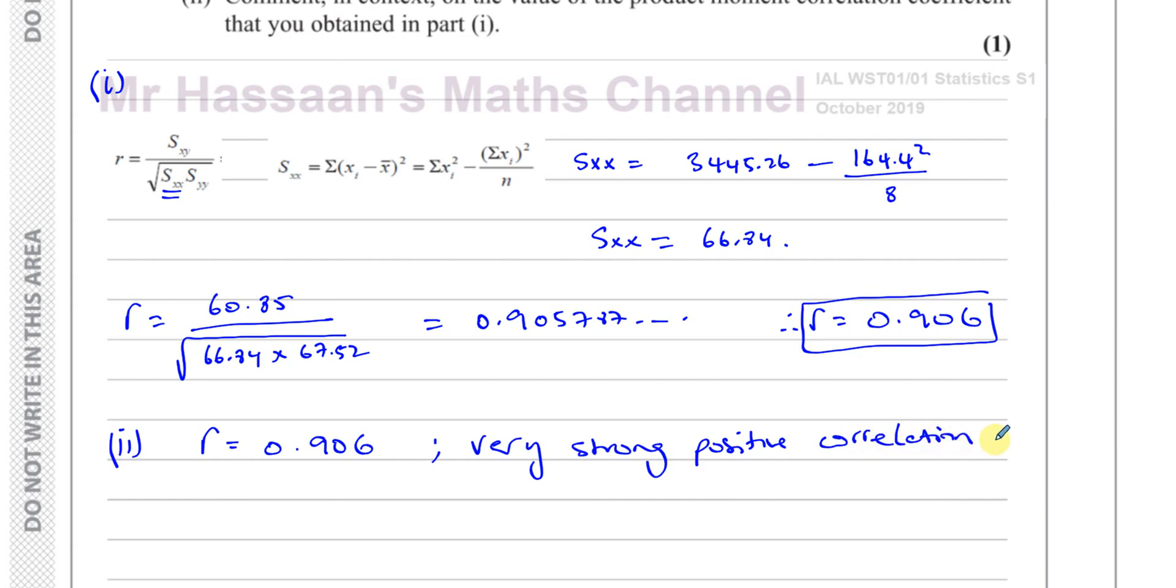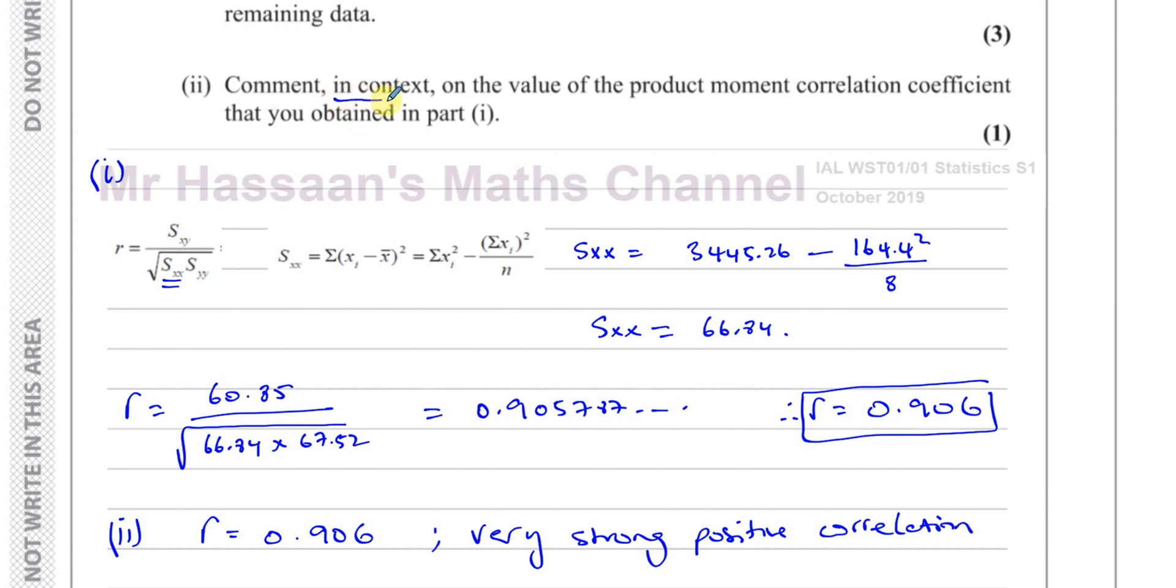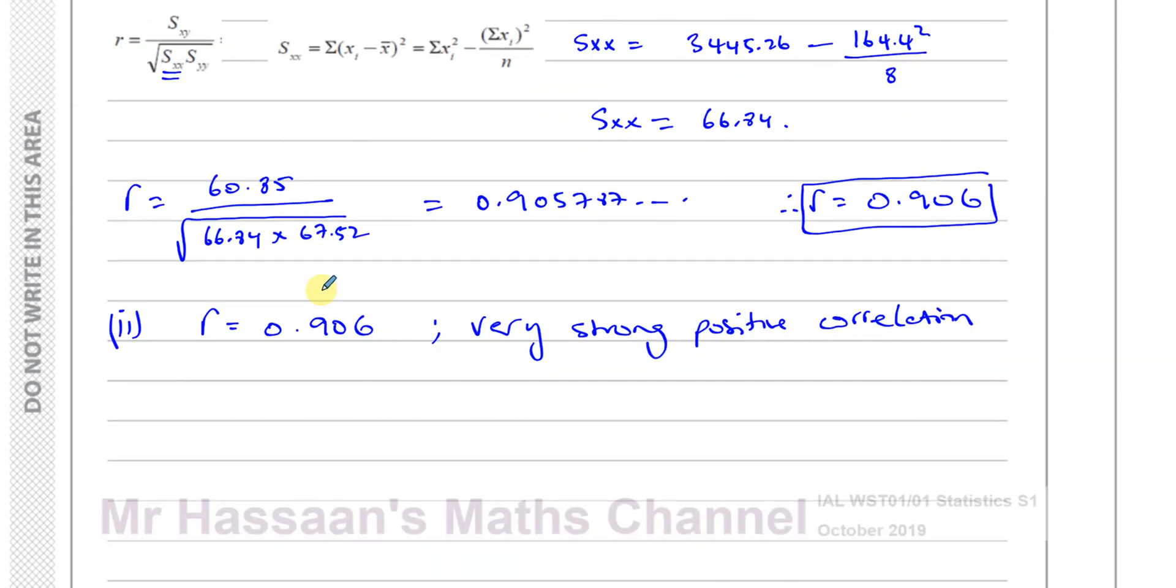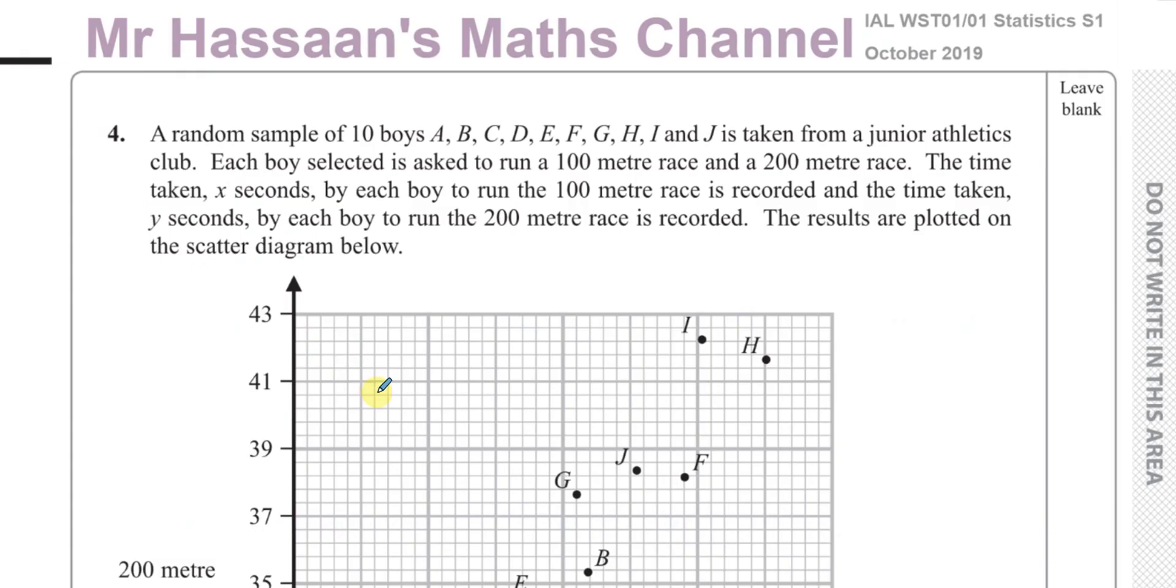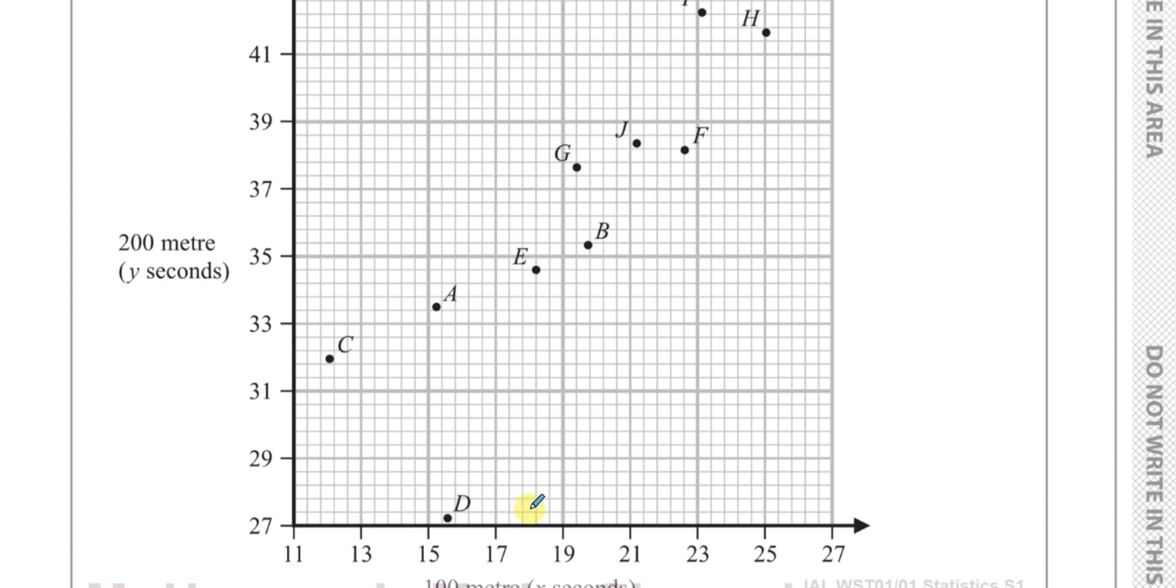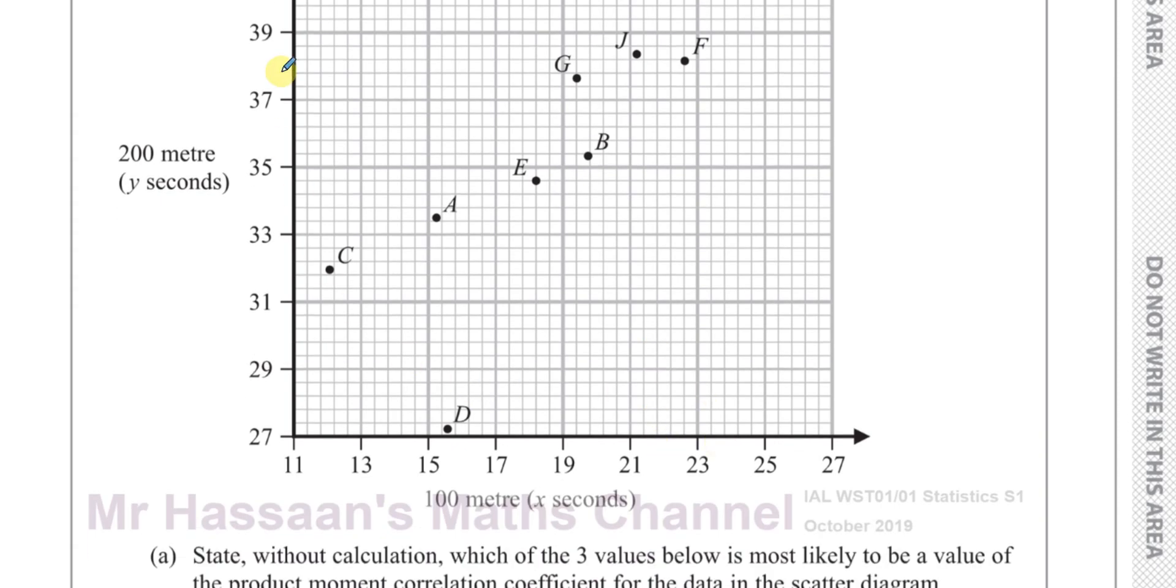Now, very important for us. It says in context. So even if I wrote this down, that won't give us the marks because they want it in context. I've written it down just to show you that this is very strong positive correlation. But what they want to see is that, you know, if somebody runs really fast in the 100 meters, they're also going to run really fast in the 200 meters. Or you can say if somebody runs really slow in the 100 meters, they're also going to run very slow in the 200 meters. So you can say the faster they run in the 100 meters, the faster they will run also in the 200 meters.